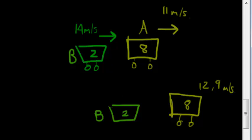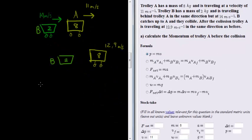The first question is calculate the momentum of trolley A before the collision. Momentum is very easy to calculate. It's simply mass times velocity. The mass of trolley A is 8 times the velocity is 11, and I'm not even going to need a calculator. I can calculate that as 88 kilogram meters per second. That is my units. That is for the momentum for A.